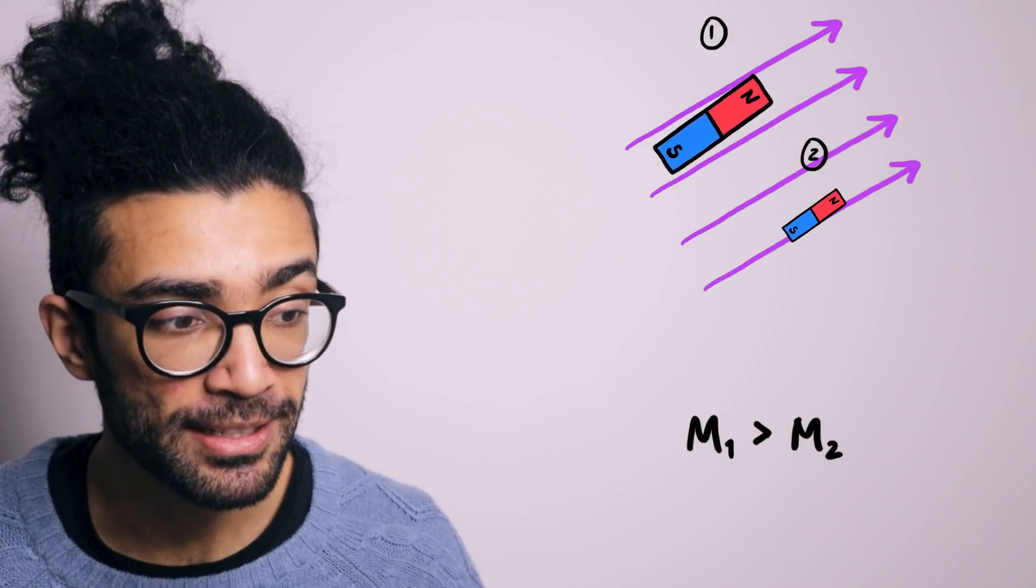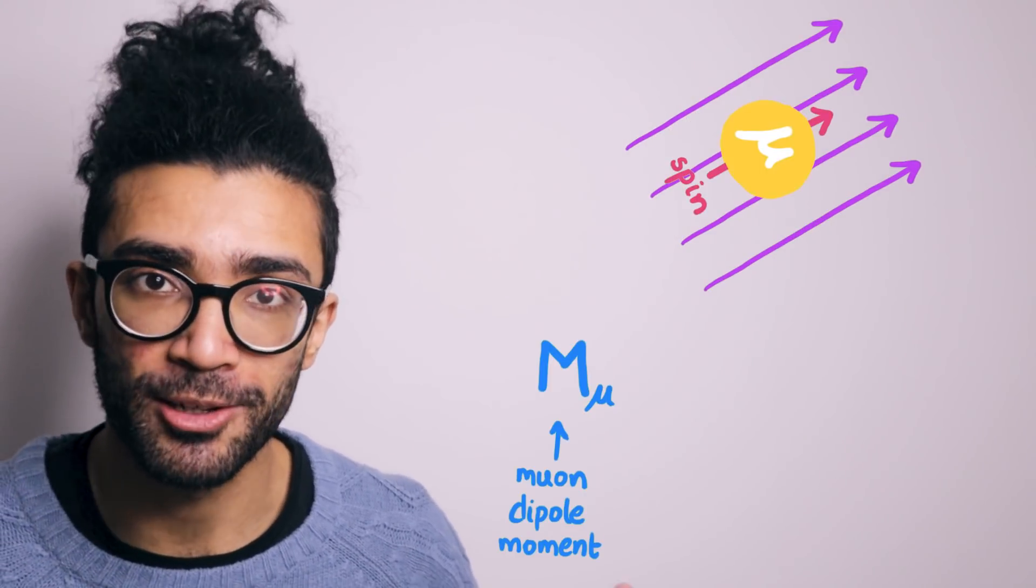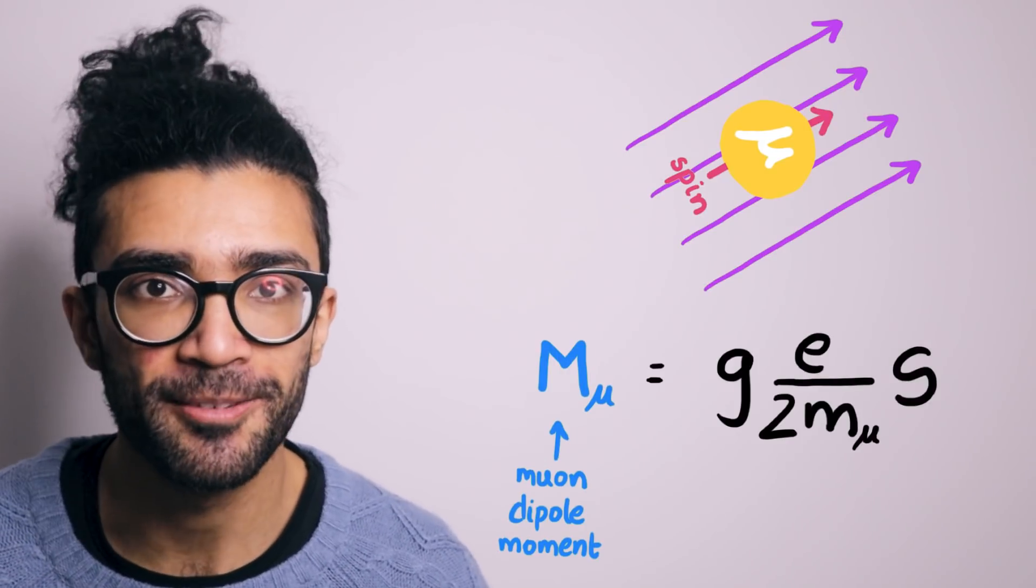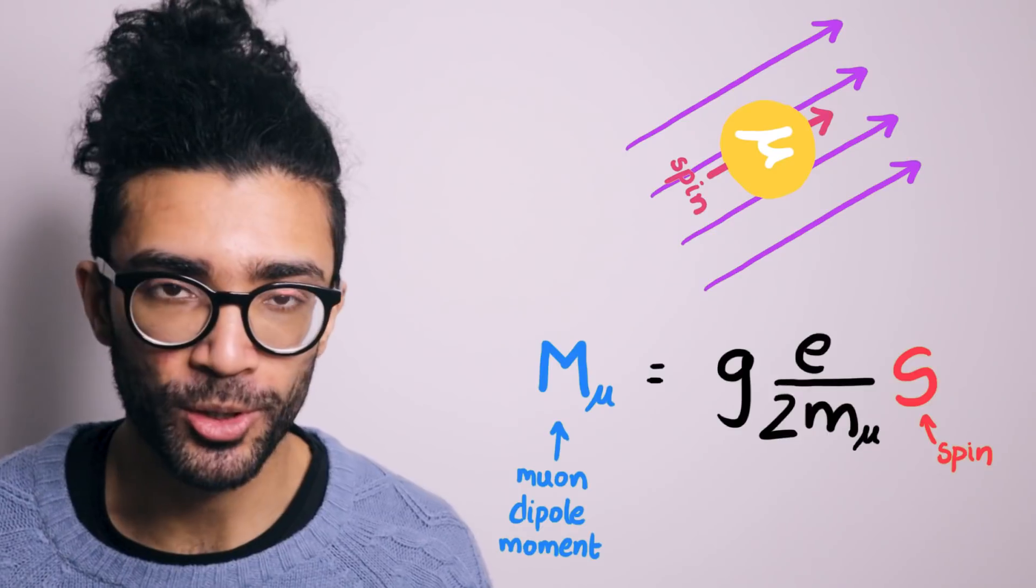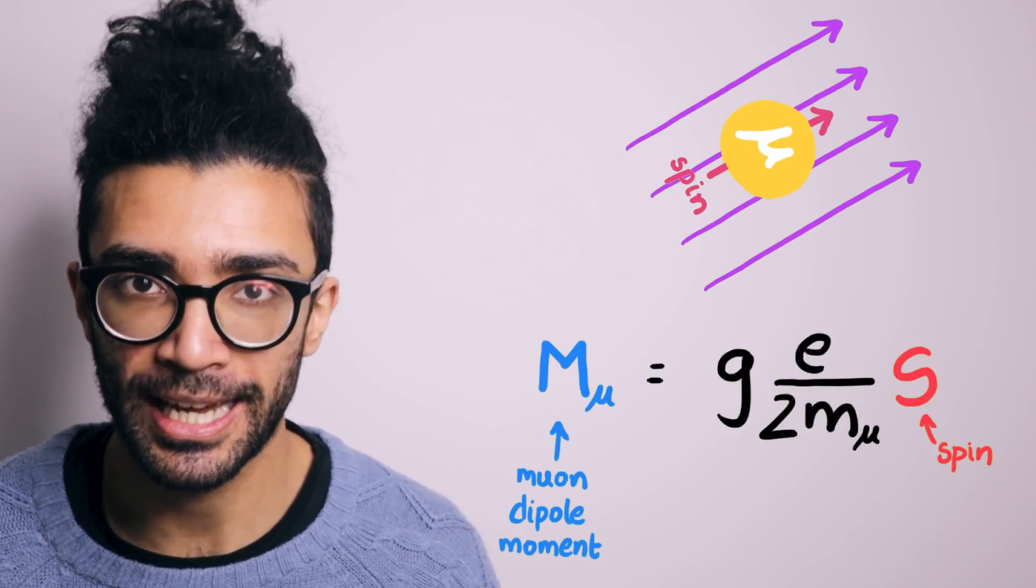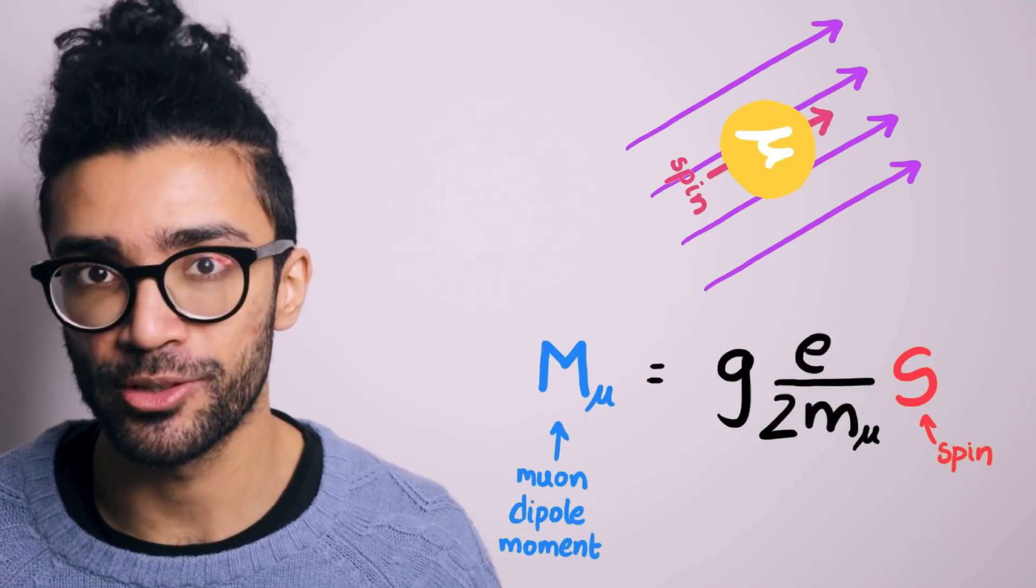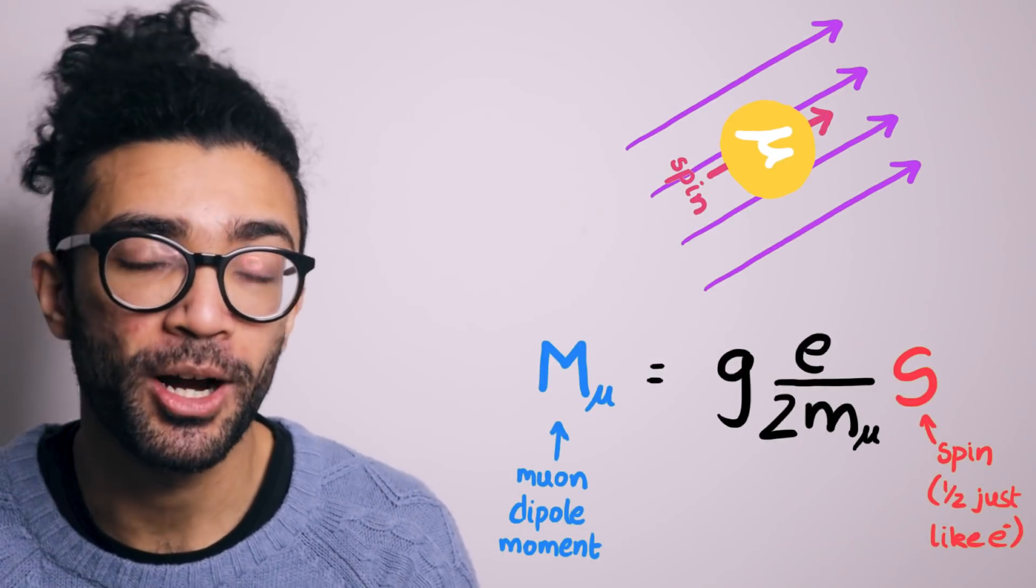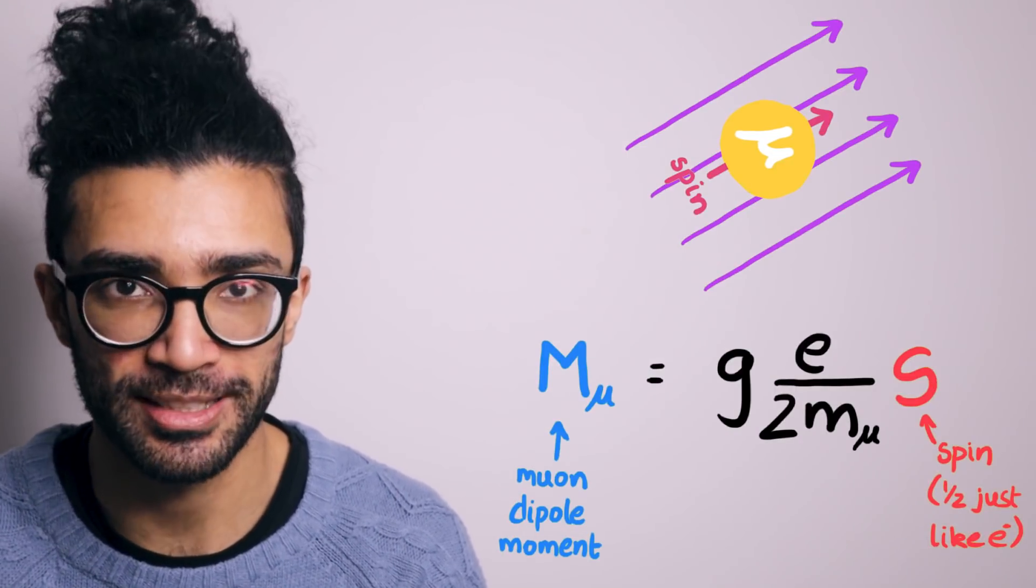And mathematically, we can relate the dipole moment of our muon, our little particle, to its spin using this equation here. S is the spin of the muon, which is exactly the same as that of an electron. And so you might be familiar that electrons have spin half. This particular value doesn't really matter here. What actually matters is some of the other quantities in this equation.